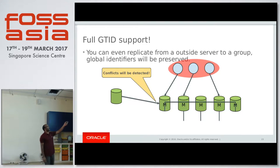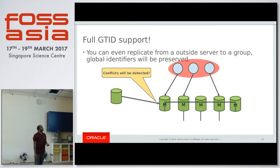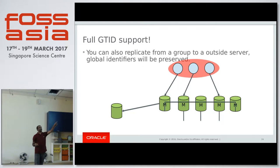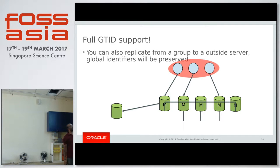You can even have async replication from an outside server to the group. Conflicts will still be detected. For example, if you connect to master one and something happening there reaches the group, any conflicts caused by other masters will be detected and rolled back before entering the group. The reverse is also possible: a server outside the group that doesn't want to join but wants to receive all data can use asynchronous replication from one of the group masters to that external server.